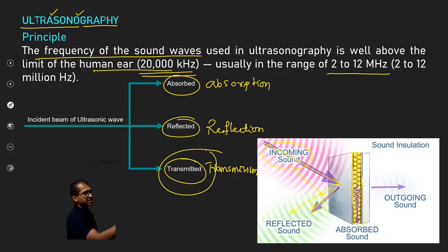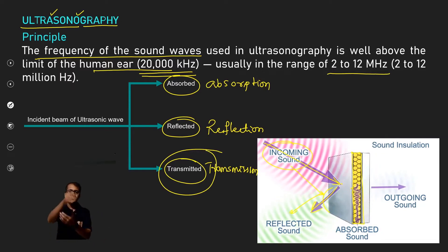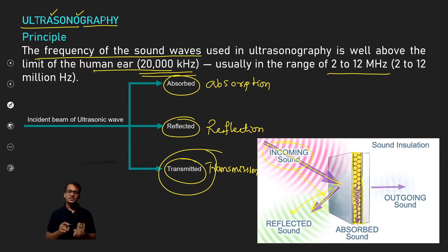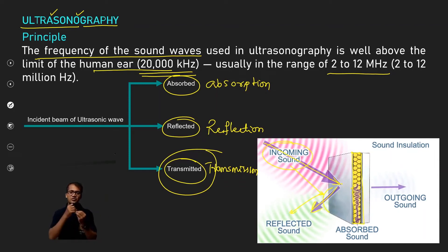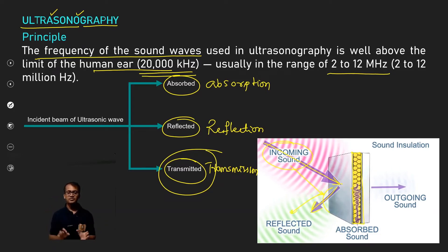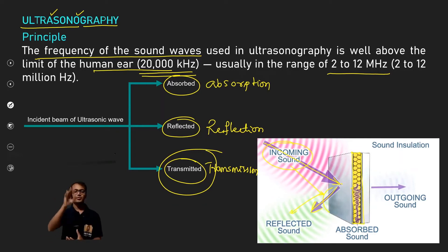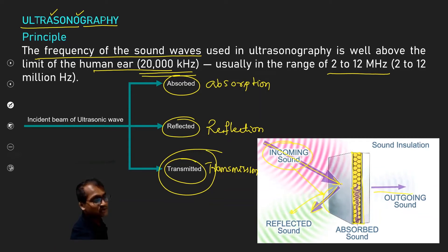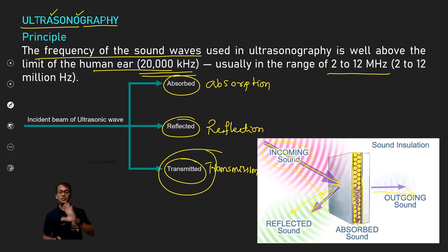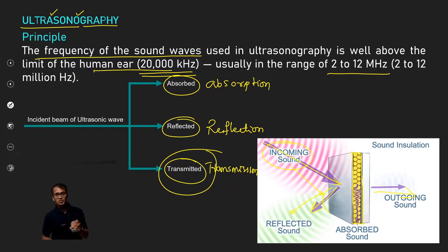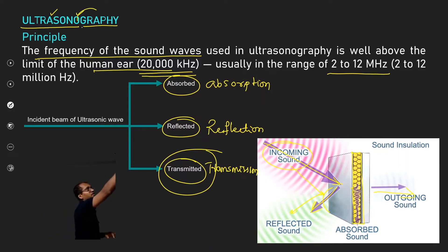Some parts of the sound wave can be transmitted — transmitted means it passes through. When the tissue is completely absent or fluid-filled, the wave can easily penetrate. So there are three phenomena: absorption, reflection, and transmission. We can use these phenomena for imaging — that is the 'graphi' part.